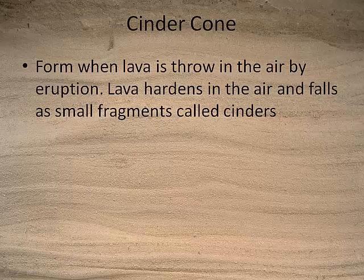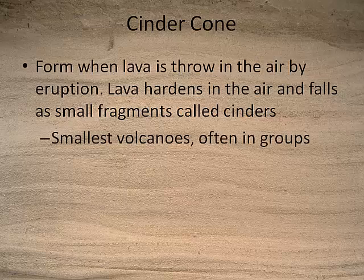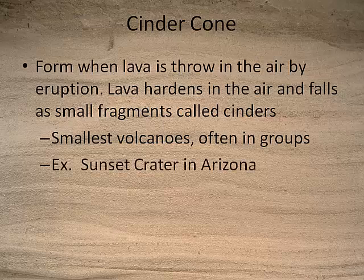The third type of volcanic landform are cinder cones. Cinder cones form when lava doesn't run over the surface but is instead thrown up into the air, hardening very quickly and falling back down as small rocks called cinders. They're the smallest volcanoes and often occur in groups. An example would be Sunset Crater in Arizona.